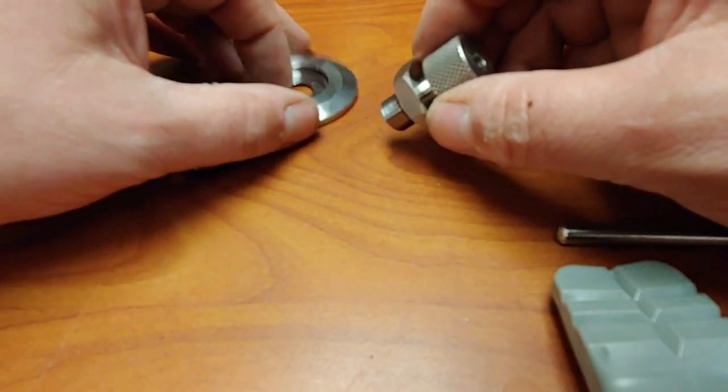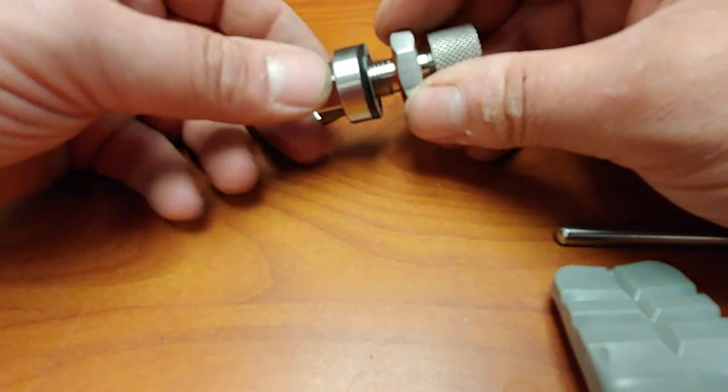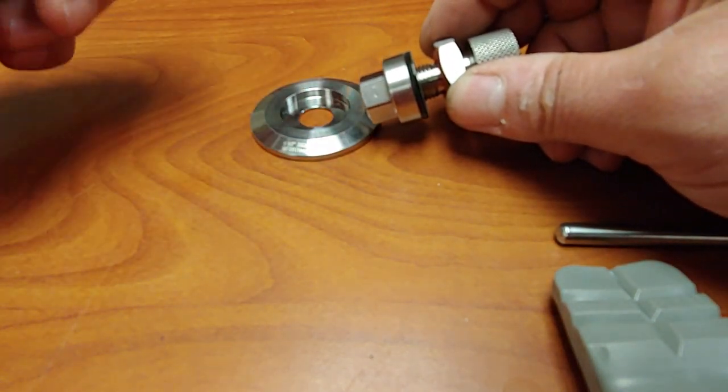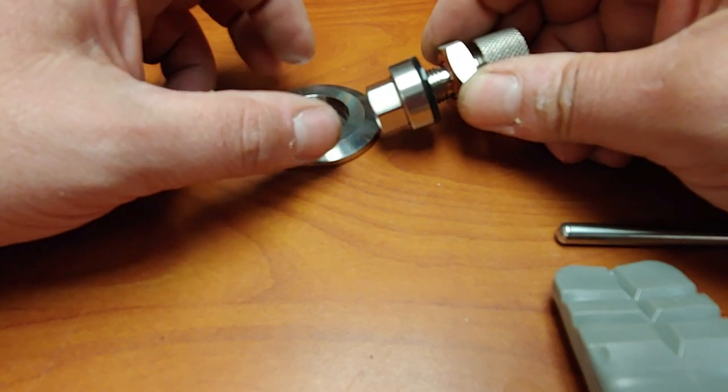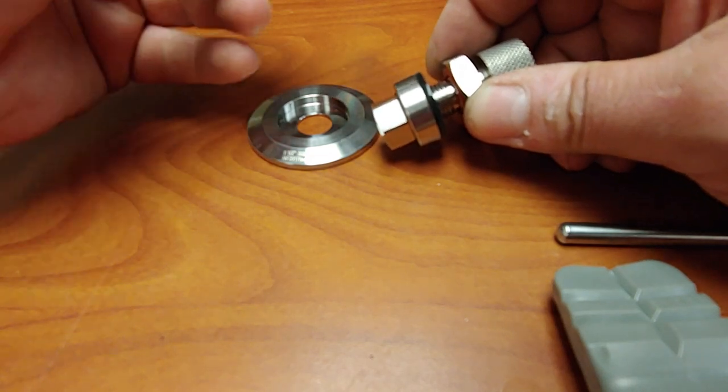This is what adapts it to tri clamp if you have a RIMS tube or if you've got a tri clamp port on your kettle already.